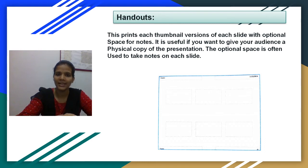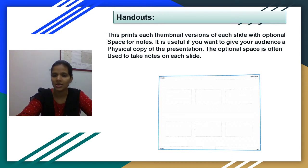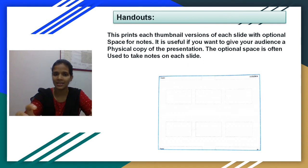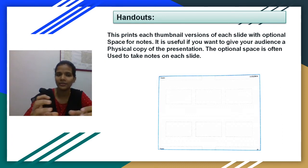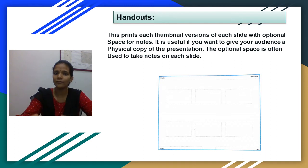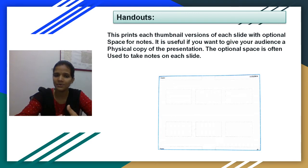Handouts prints a thumbnail version of each slide with optional space for notes. It is useful if you want to give your audience a physical copy of the presentation. In one page you will have multiple slides in small boxes, and below each slide you can write notes — what you want to say about that slide. So you can easily add notes on each slide and it is convenient for the audience.